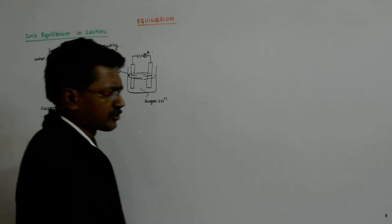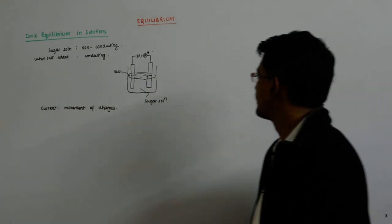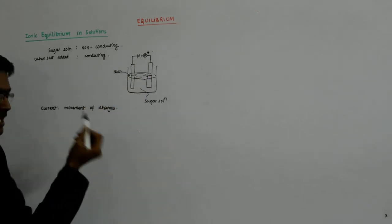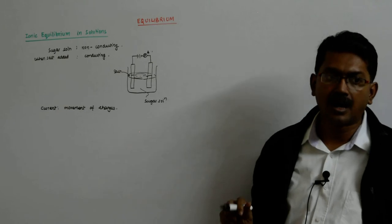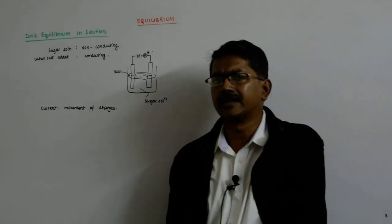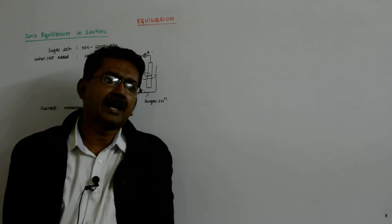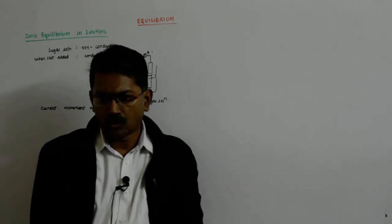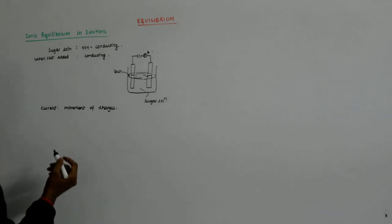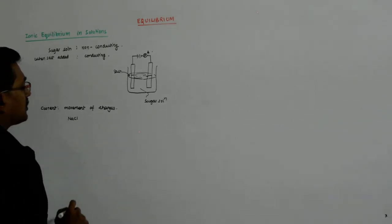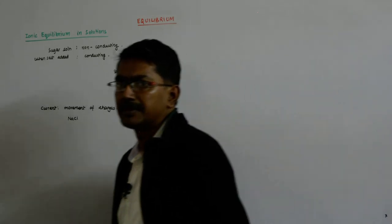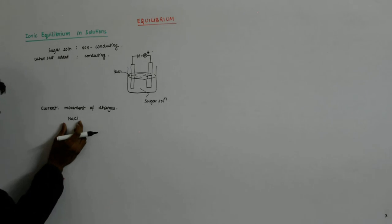These are some electrodes, maybe copper electrodes or something. Now what happens is there is current, so some charges are moving. Now what kind of charges? Are they electrons? The answer could be yes or no, but try to think. There are electrons in water molecules as well, so if it had to move, why did it not start moving in water? And what happened when we put salt into it? So we have seen that NaCl is an ionic compound. By the donation of one electron by Na and by the acceptance of one electron by Cl, they become Na plus and Cl minus and then they get attracted together and form this compound.